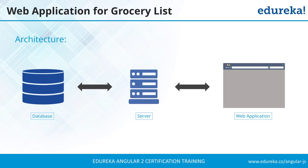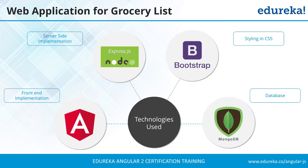The architecture of the grocery list application will have a web application on one end, a database on the other end to store the grocery list data, and a server in between to make changes, update data, and provide it to the client. For the backend we'll use MongoDB and Express.js along with Node.js, and for the client-side we'll use Angular as well as Bootstrap for styling.